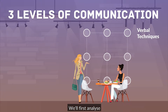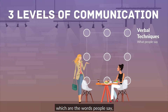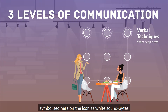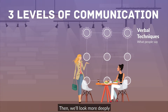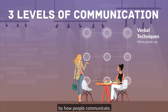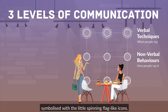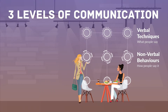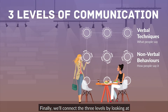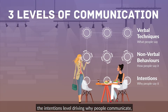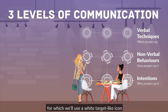We'll first analyse the verbal communication techniques, which are the words people say, symbolised here on the icon as white soundbites. Then we'll look more deeply at how the verbal level is heavily influenced by how people communicate, which we'll call the non-verbal behaviours, symbolised with the little spinning flag-like icons. Finally, we'll connect the three levels by looking at the intentions level driving why people communicate, for which we'll use a white target-like icon because it's the target of our communication.